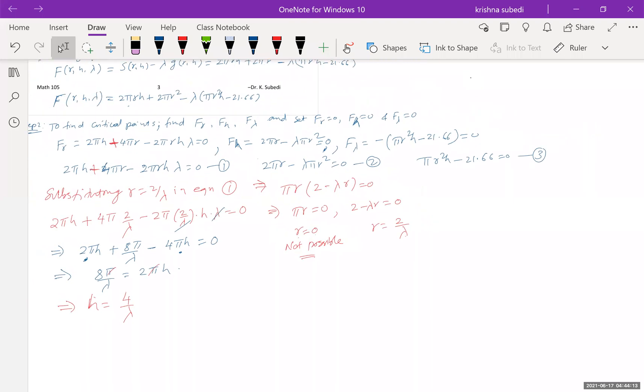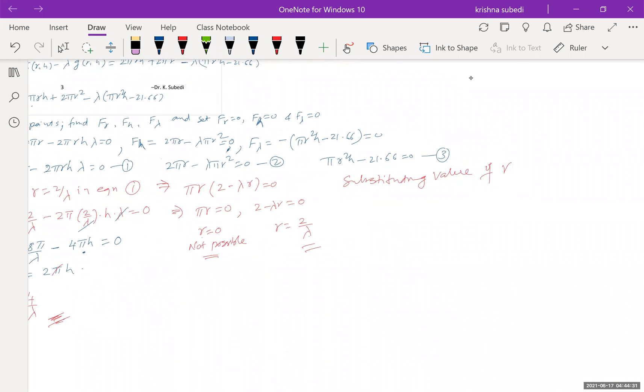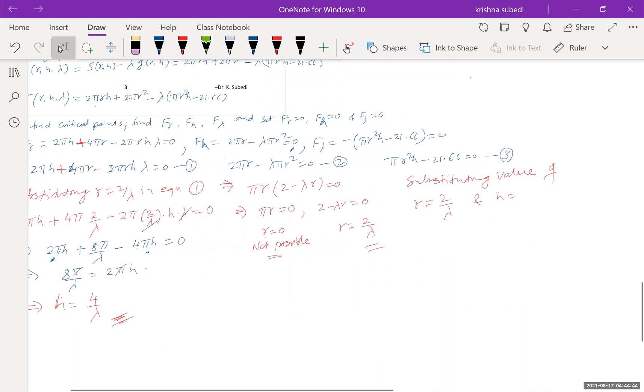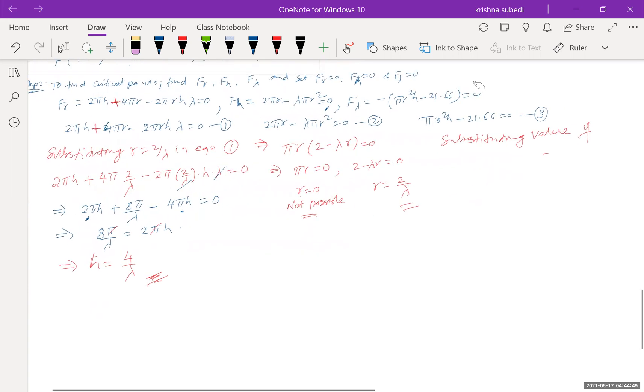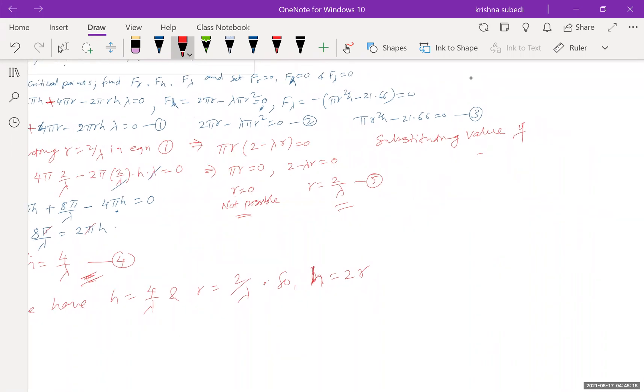Now, let us substitute this two value. So this value here and this value here, let us substitute that because we already have value of r and h. We notice that, let's say this is equation 4 and this is equation 5. So we have h equals 4 over lambda and r equals 2 over lambda. This gives us, therefore, so I can write that h equals 2r. Does that make sense to everyone?